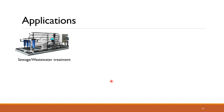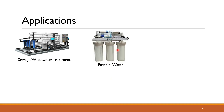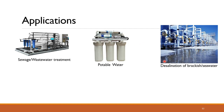Coming to the applications of reverse osmosis — first, it is extensively used in the treatment of wastewater, which can be effectively treated and reused. Second, it is used for preparation of potable water, that is drinking water — the aqua guards or water purifiers in homes contain reverse osmosis membrane modules. Third, reverse osmosis is used for desalination of brackish water or seawater, where the salt concentration is high, so that the water can be used as potable water.